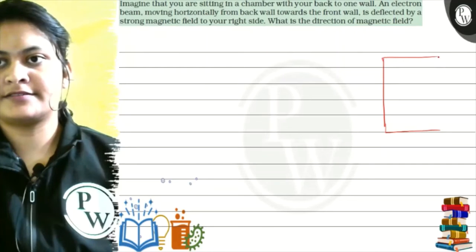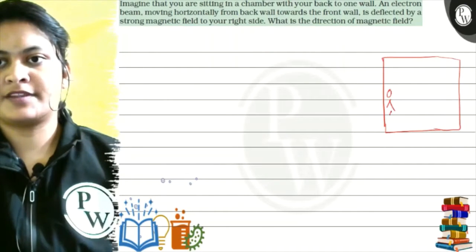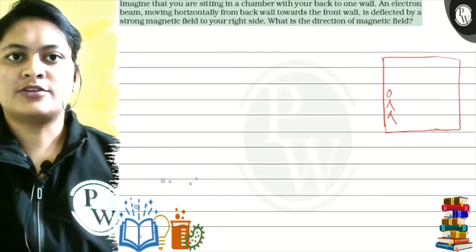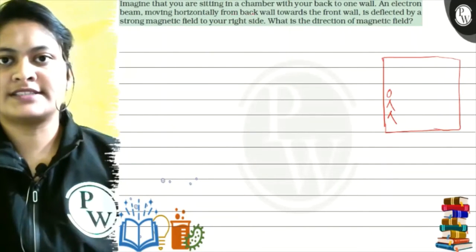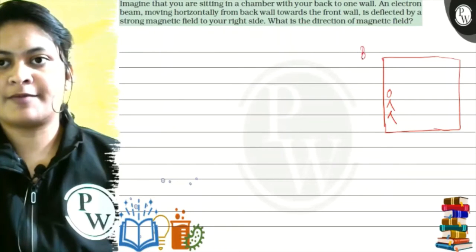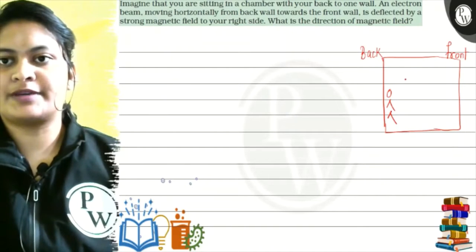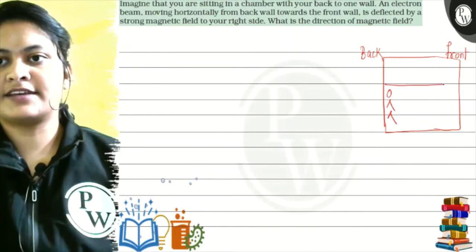We are sitting here. Right? An electron beam is moving horizontally from back towards the front wall. So, what is our back wall? And what is our front wall? This is an electron beam which is from back to front.